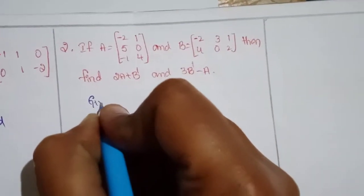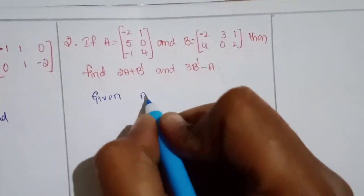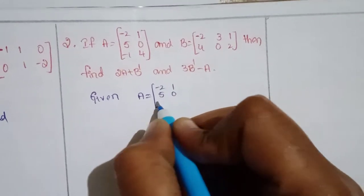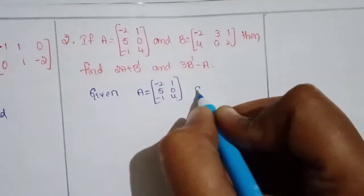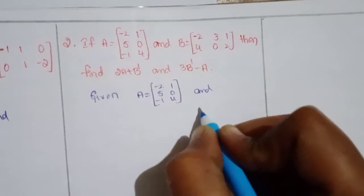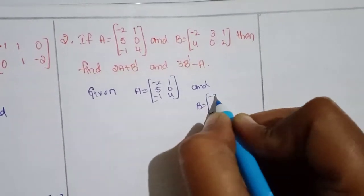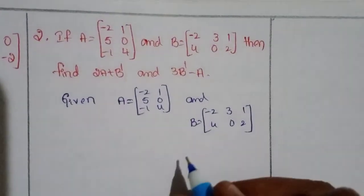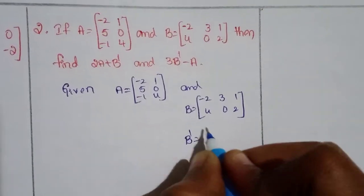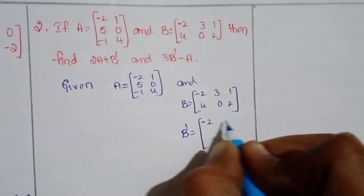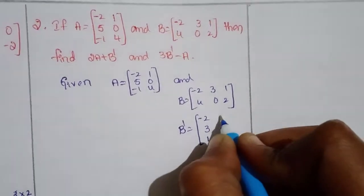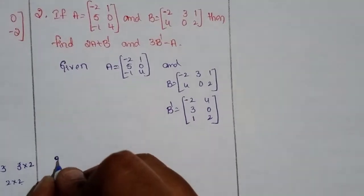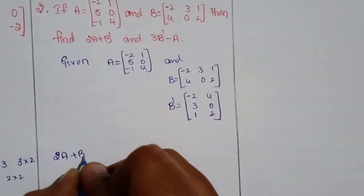Given A = [-2, 1, 5; 0, -1, 4] and B = [-2, 3, 1; 4, 0, 2]. We find B transpose = [-2, 4; 3, 0; 1, 2]. For the first part, 2A + B^T: 2 times A matrix [-2, 1, 5; 0, -1, 4] plus B transpose [-2, 4; 3, 0; 1, 2].